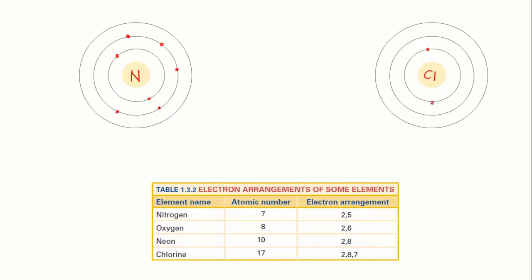Chlorine is element number 17, so its configuration is 2, 8, 7. 2 in level 1, 8 in level 2, and the remaining 7 in level 3.